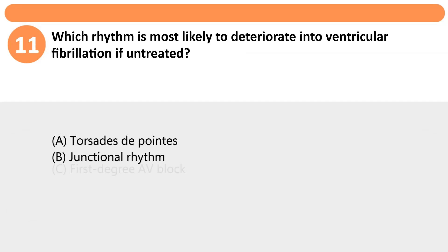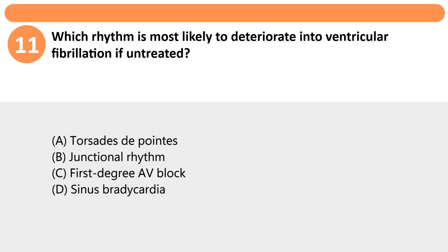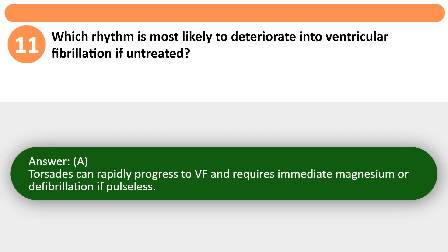Which rhythm is most likely to deteriorate into ventricular fibrillation if untreated? A. Torsades de pointes. B. Junctional rhythm. C. First degree AV block. D. Sinus bradycardia. Answer: A. Torsades can rapidly progress to VF and requires immediate magnesium or defibrillation if pulseless.